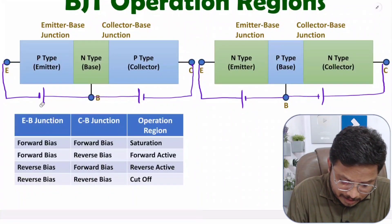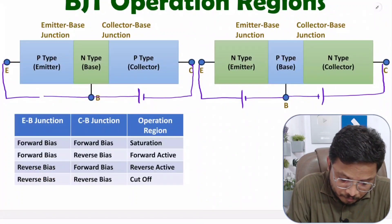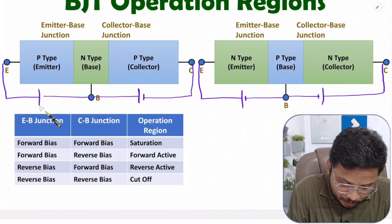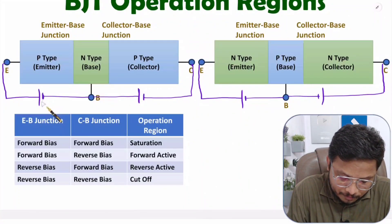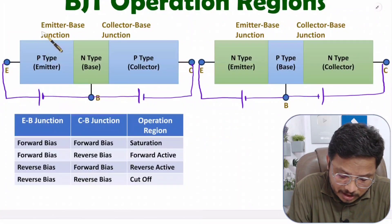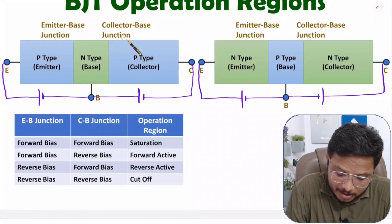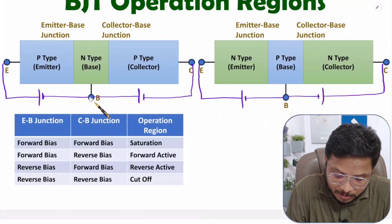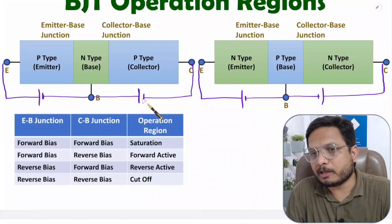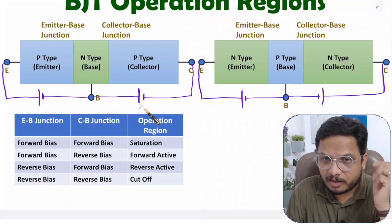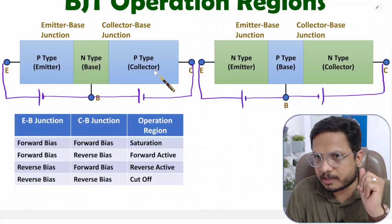In common base configuration, to keep the emitter-base junction in forward bias, this P-type should be connected with the positive terminal of the battery and the N-type with the negative terminal. To have the collector-base junction in reverse bias, the N-type should be connected with the positive terminal and the P-type with the negative terminal. That is how we can have this PNP transistor in forward active region.